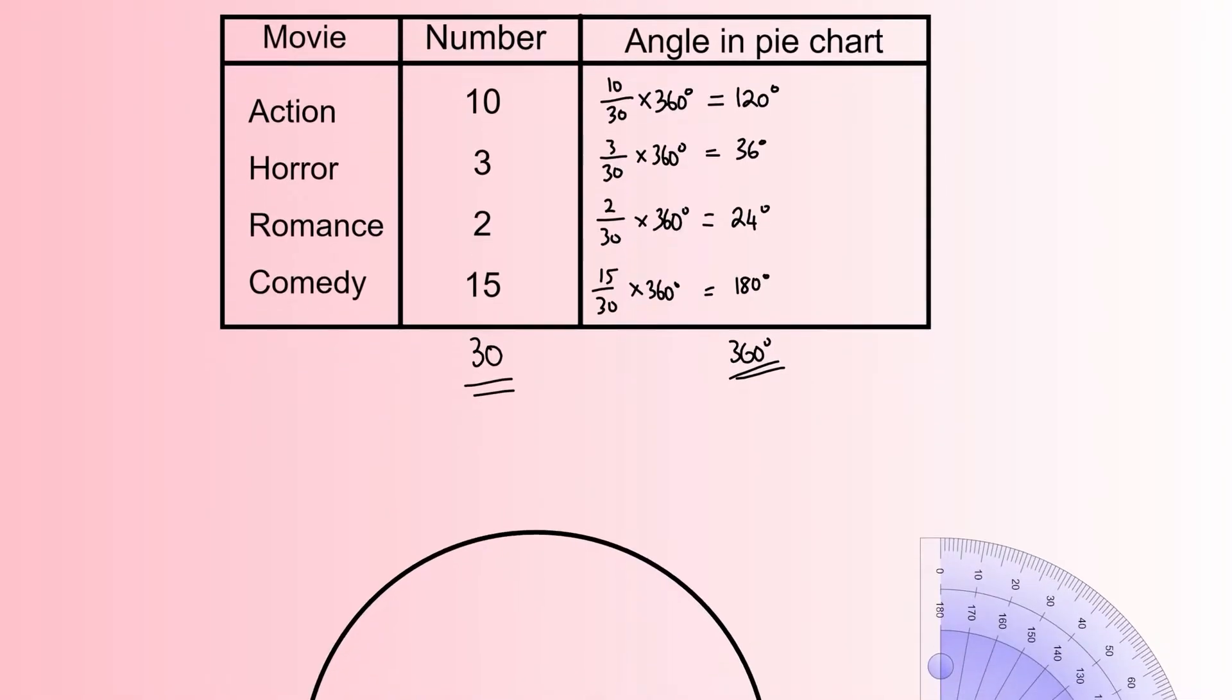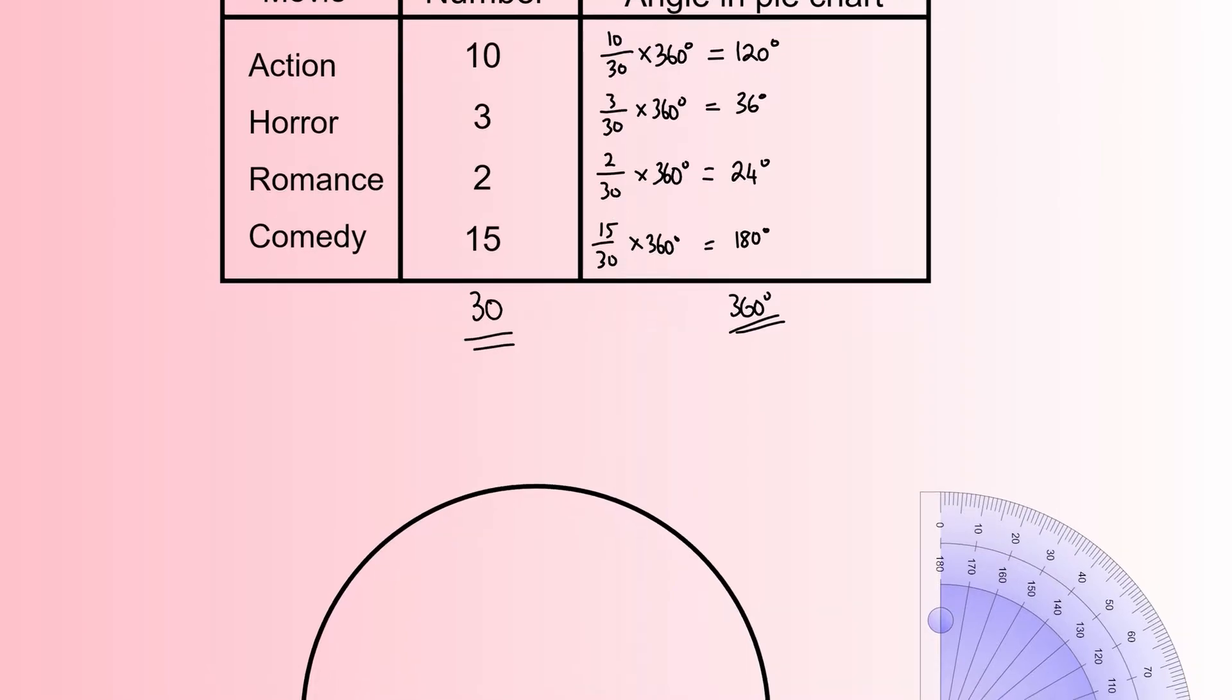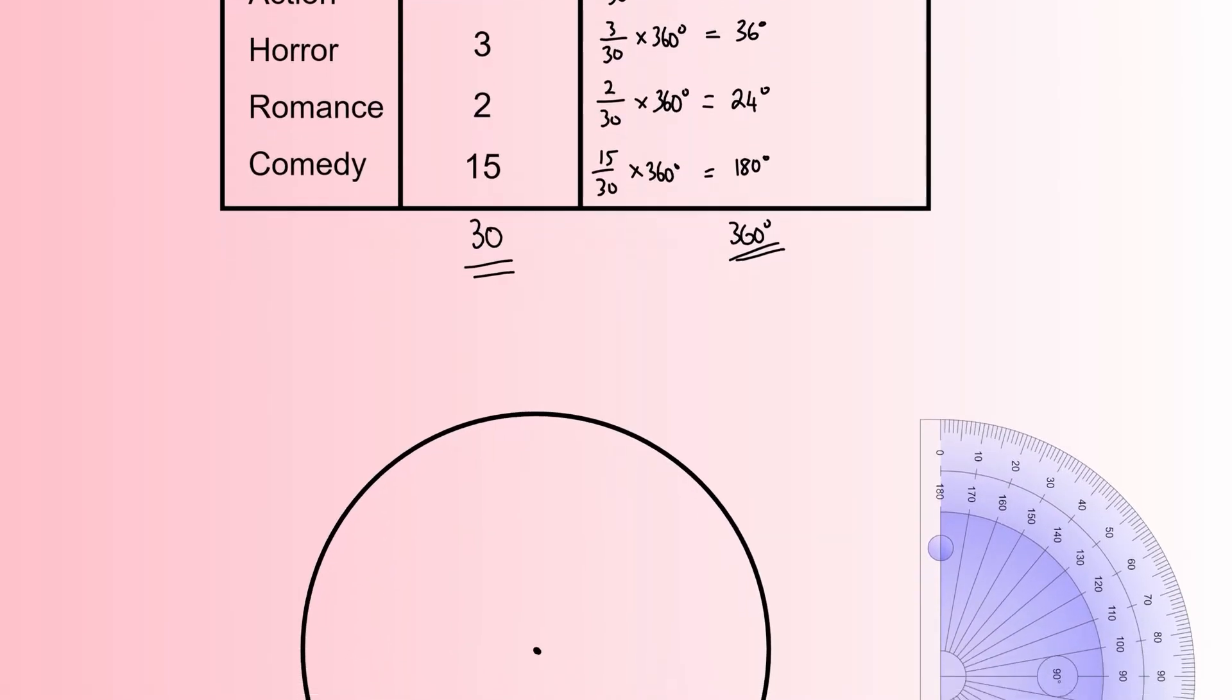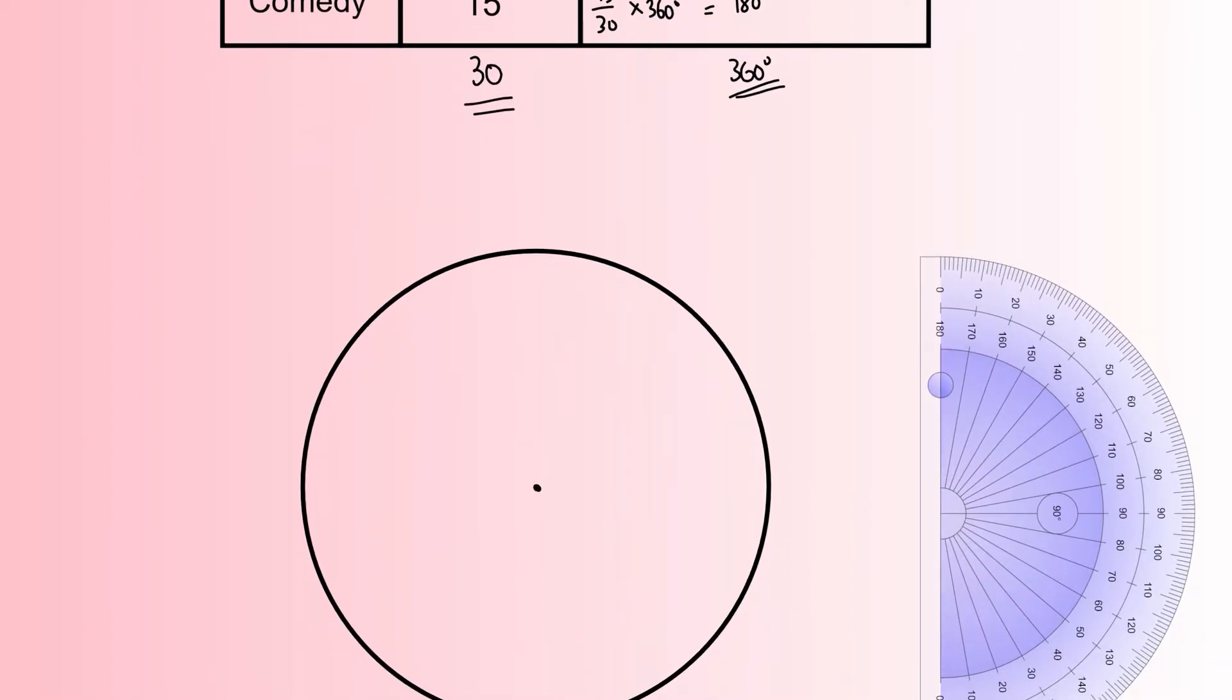I'm just scrolling down, converting these angles into the pie chart. Action is 120 degrees, so we're going to start off. What I would normally do is just draw a straight line straight up from the center of the circle as my starting point. That's quite a good general idea to keep each pie chart consistent. It's not necessary, but it means you've always got that starting point.